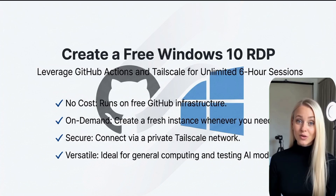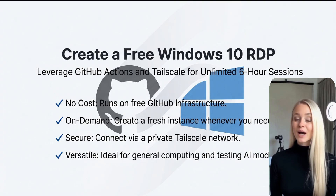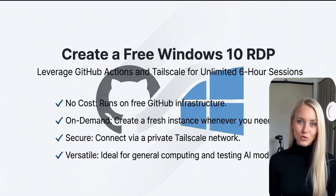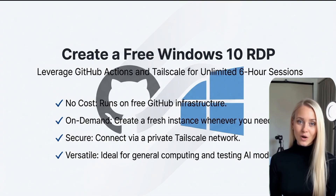Discover how to get a free Windows 10 RDP for your tasks. This remote desktop allows you to download and test AI models, providing an excellent environment for general computing. While it may not be suitable for demanding tasks like running games, Blender, or image-generating AI due to lack of a dedicated graphics card and sound, it performs exceptionally well for everything else.